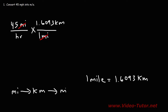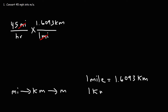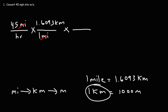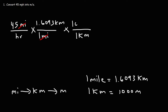Next, we'll need to convert kilometers to meters. It's good to know that one kilometer is equivalent to 1,000 meters. So in the next step, we're going to put kilometers on the bottom and then meters on top, so that we can cancel the unit kilometers. So right now, we have the desired unit meters.